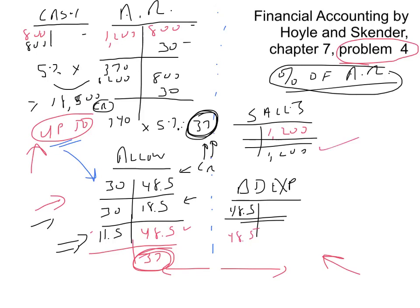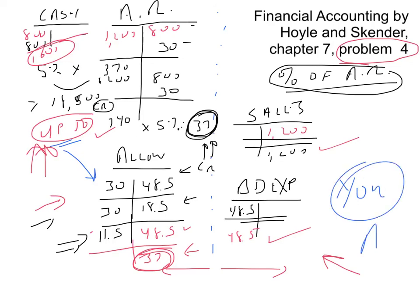Sales were $1,200,000, bad debt expense is $48,500, accounts receivable is $740,000, cash is $1,600,000, and the allowance account is $37,000 — because that's what we brought it up to. I know this is new material for a lot of you, but you can do this. You can make an A. These two problems show you the percentage of sales method and the percentage of accounts receivable method. Go to it.